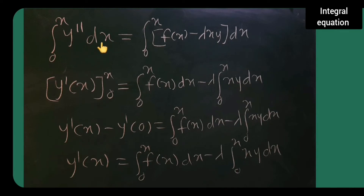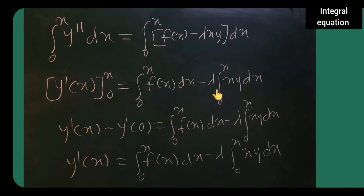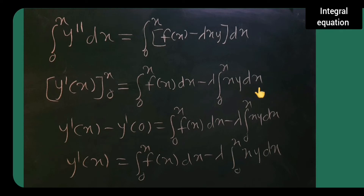The integral of the second derivative is y dash of x, evaluated from 0 to x, which equals integral from 0 to x of f of x dx, minus lambda times integral from 0 to x of x y dx. Applying the limits gives y dash of x minus y dash of 0 equals that right-hand side.